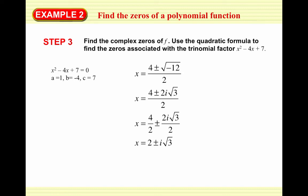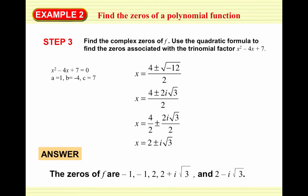So all of our zeros listed together are: -1, -1 (counted twice), 2, 2 + i√3, and 2 - i√3. That's 1, 2, 3, 4, 5 zeros total, which makes sense because we started with an x to the 5th function.